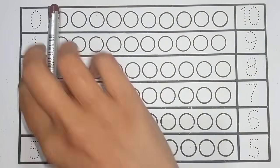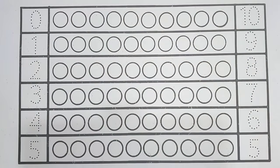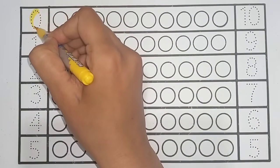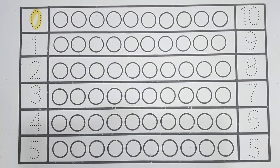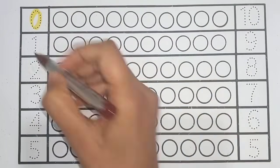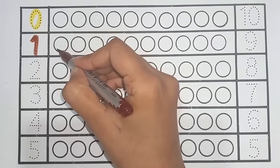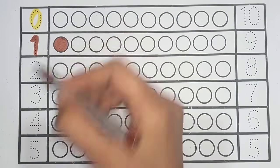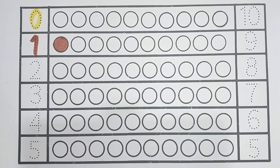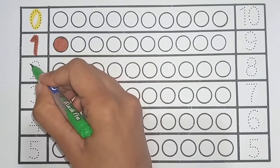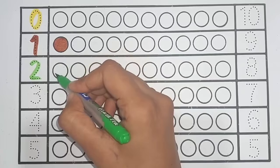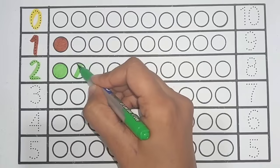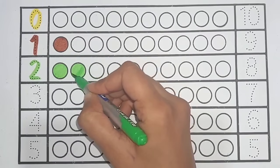Let's fill the colors. Yellow color: 0. Brown color: 1. 1 circle. Light green color: 2. 1, 2. 2 circles.